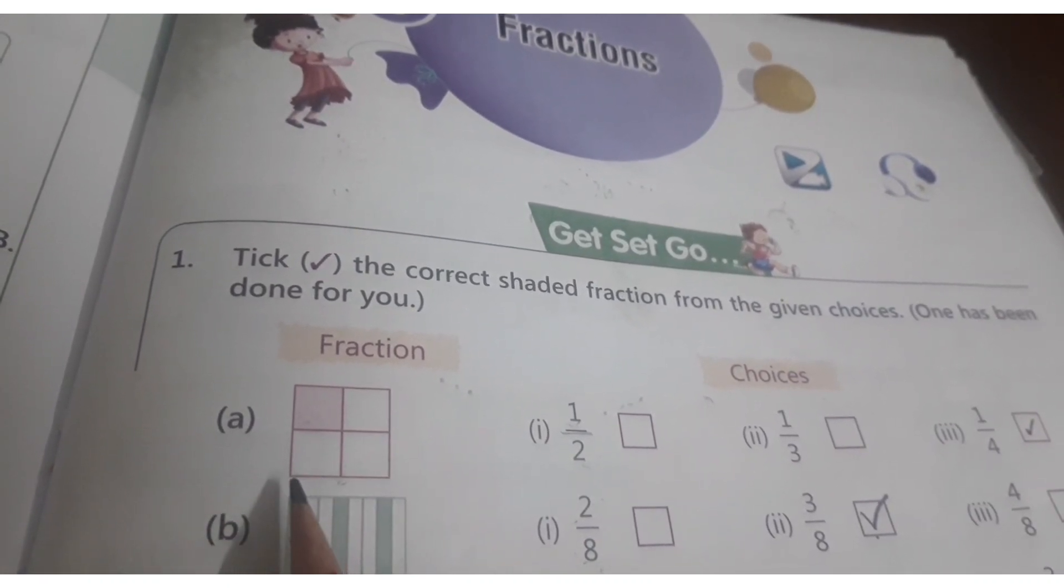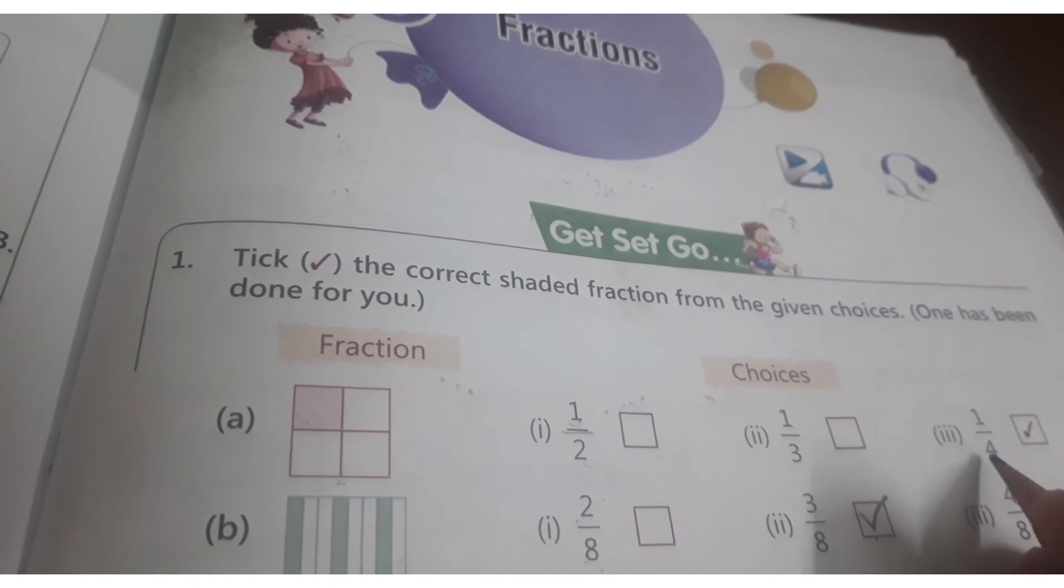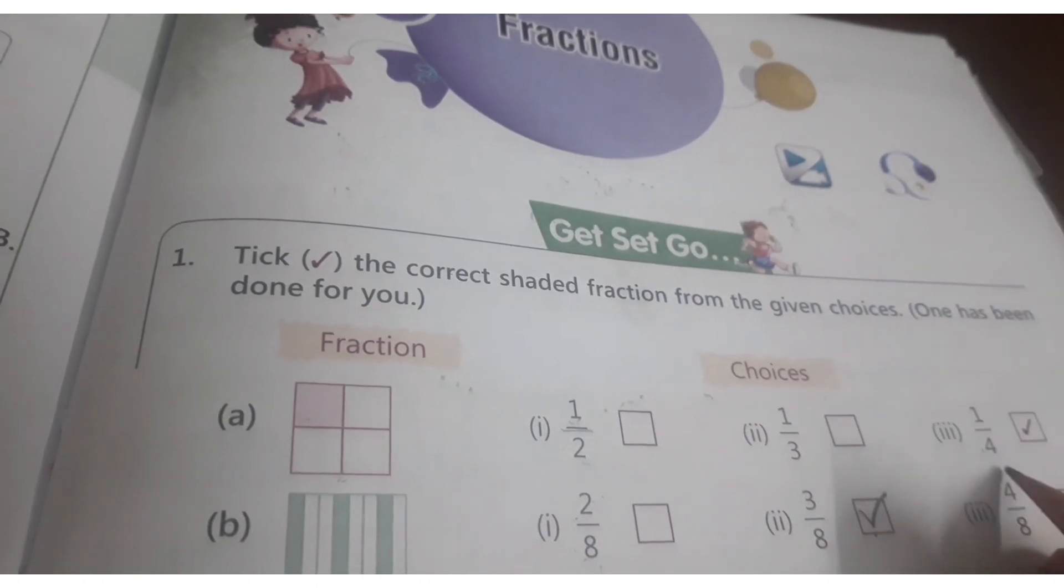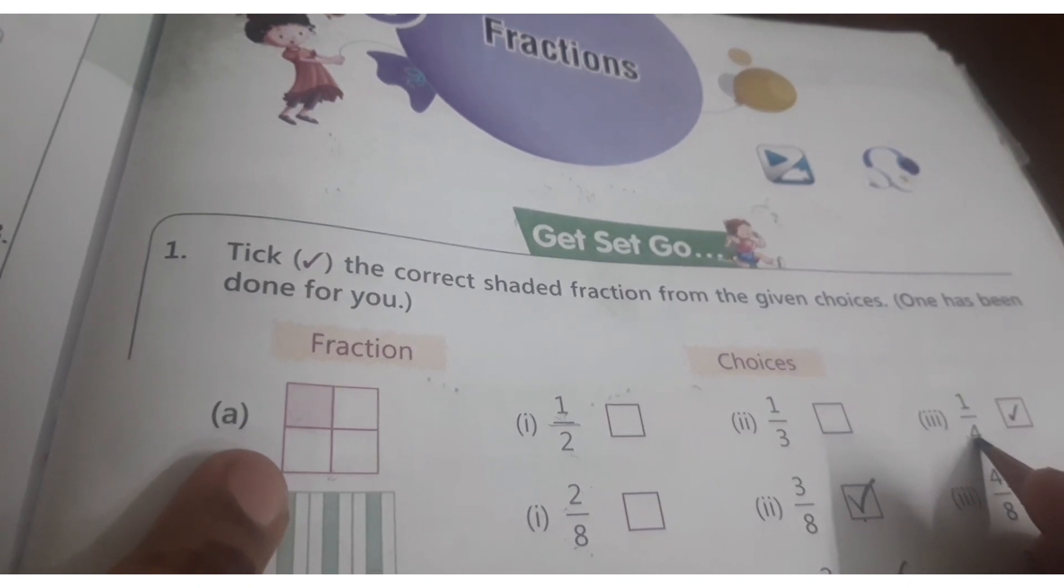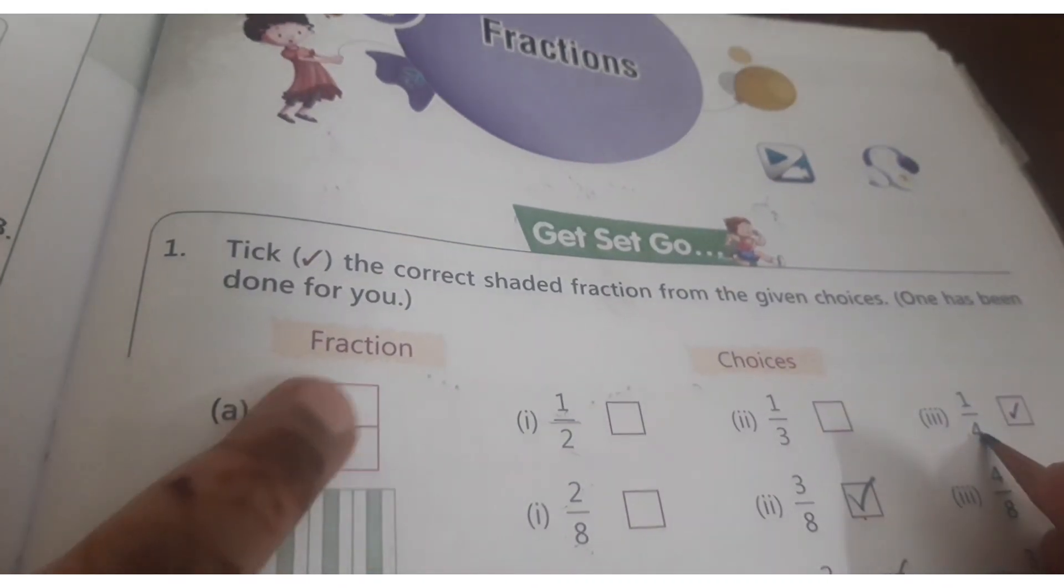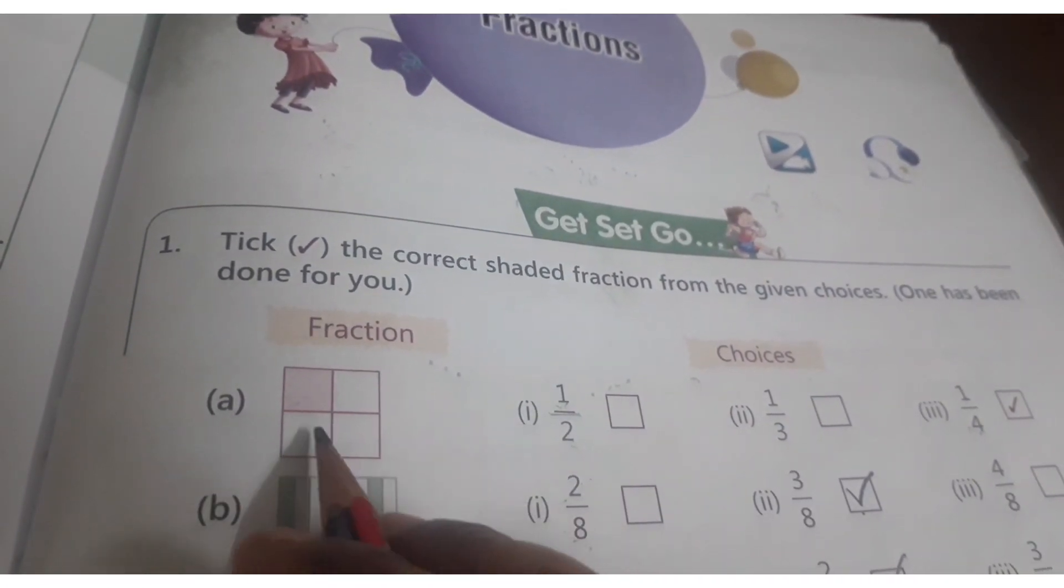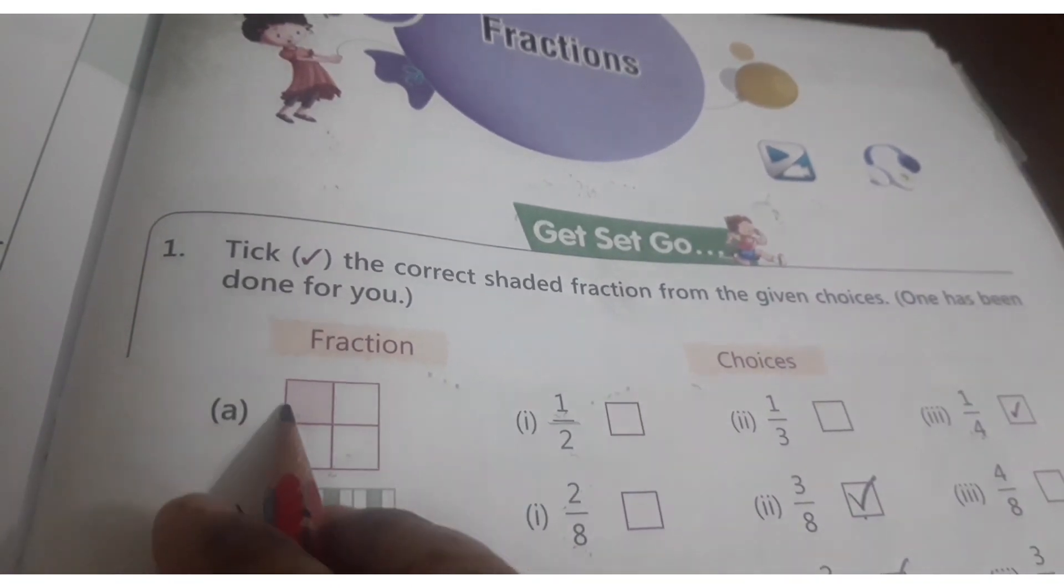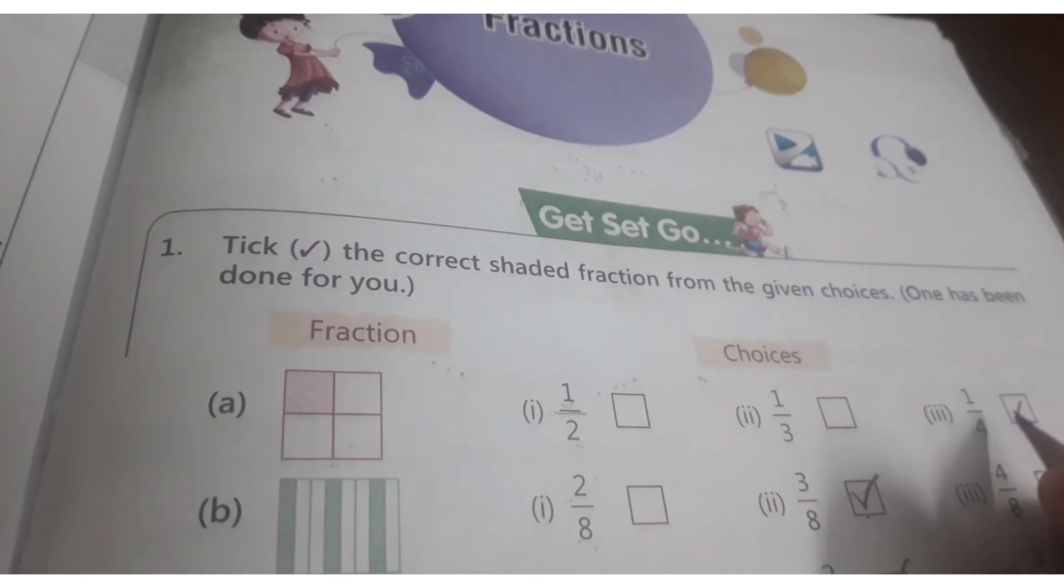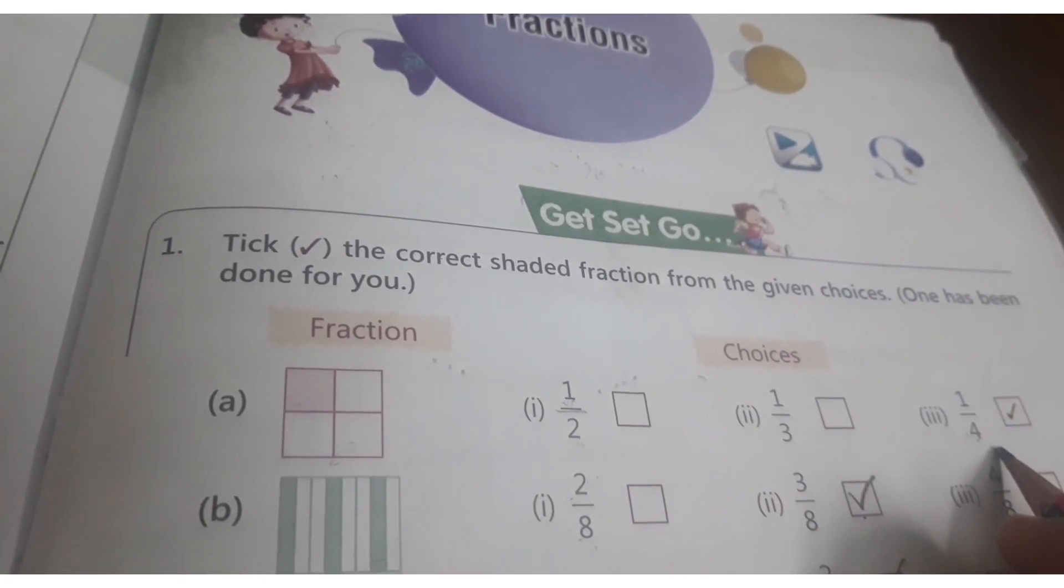So here square, how many parts are there? 4. So where is 4? Here, denominator. First we have to check denominator. Total boxes divide by 1, 2, 3, 4. Out of 4 boxes, how many boxes are colored? 1. So how to write the fraction? 1 by 4.